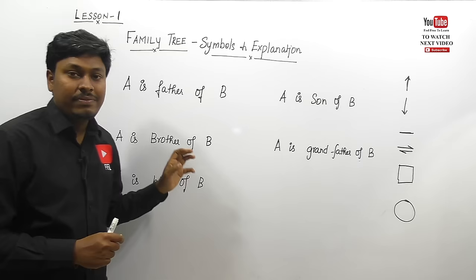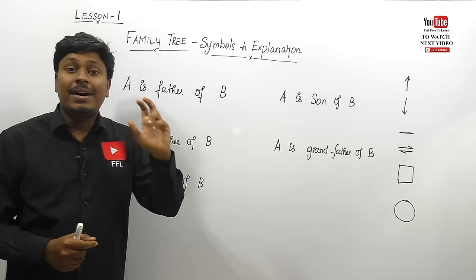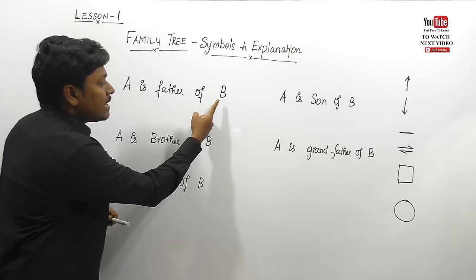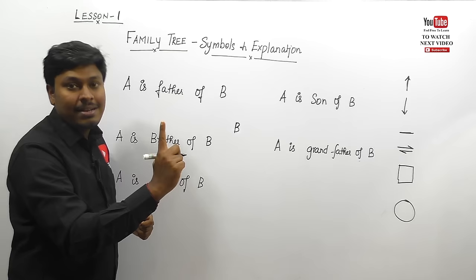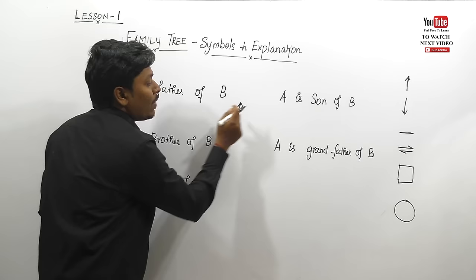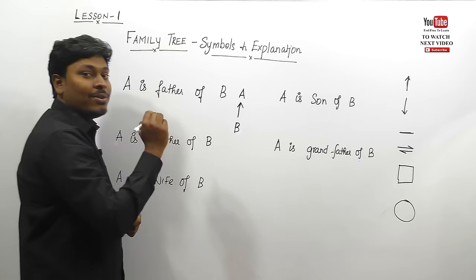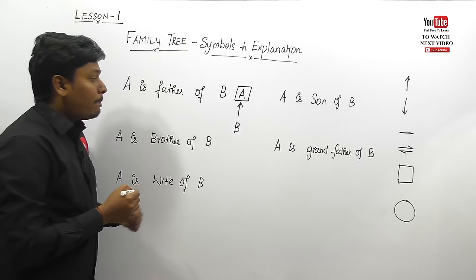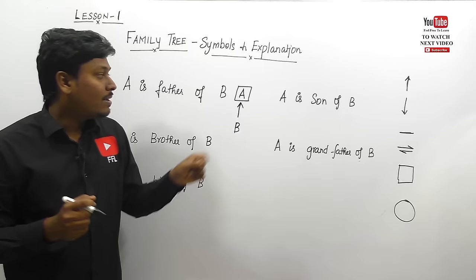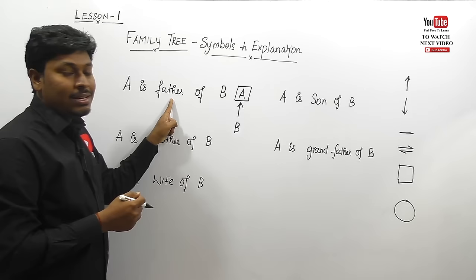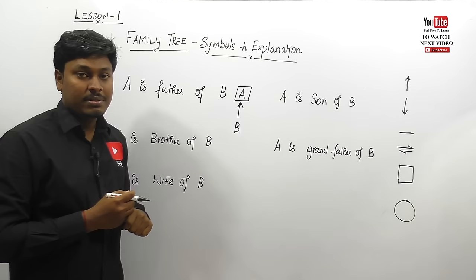A is father of B. Father is a male person and is first generation. So write B first — B is having a father A. Because father is first generation, we use one up arrow. One arrow denotes one generation. A is a father, which is a male person, so denoted by a box. We don't know the gender of B.